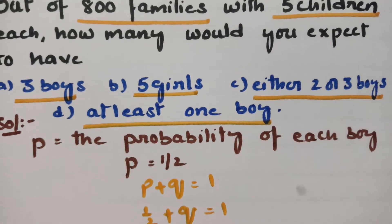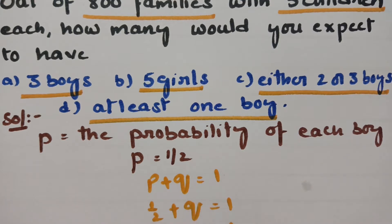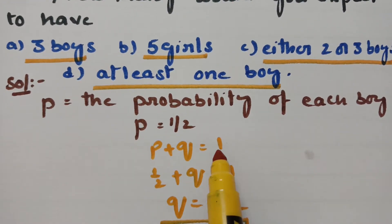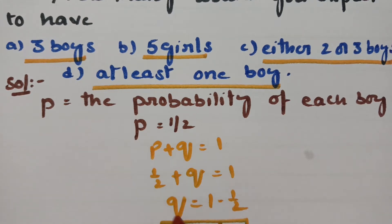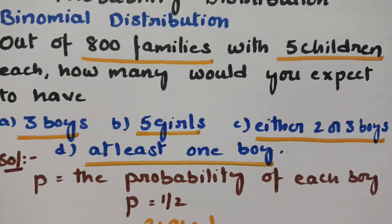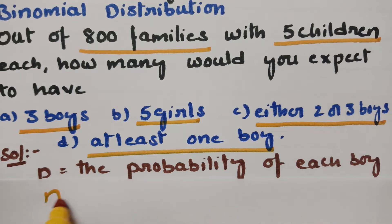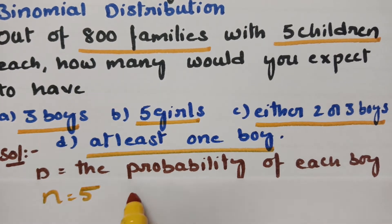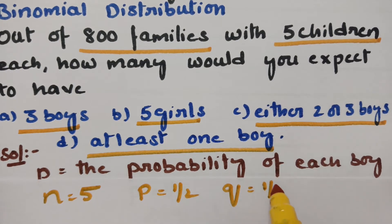In the solution, P is the probability of having a boy, which is equal to half. The total probability equals 1, so Q equals 1 minus half, giving Q equal to half. From the question, N equals 5 children. So N=5, P=1/2, and Q=1/2.